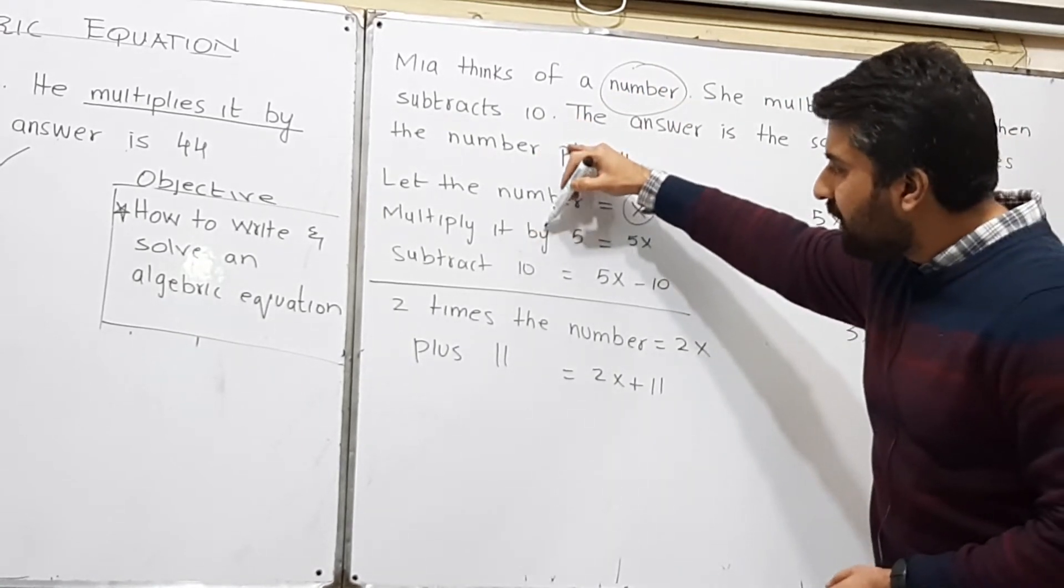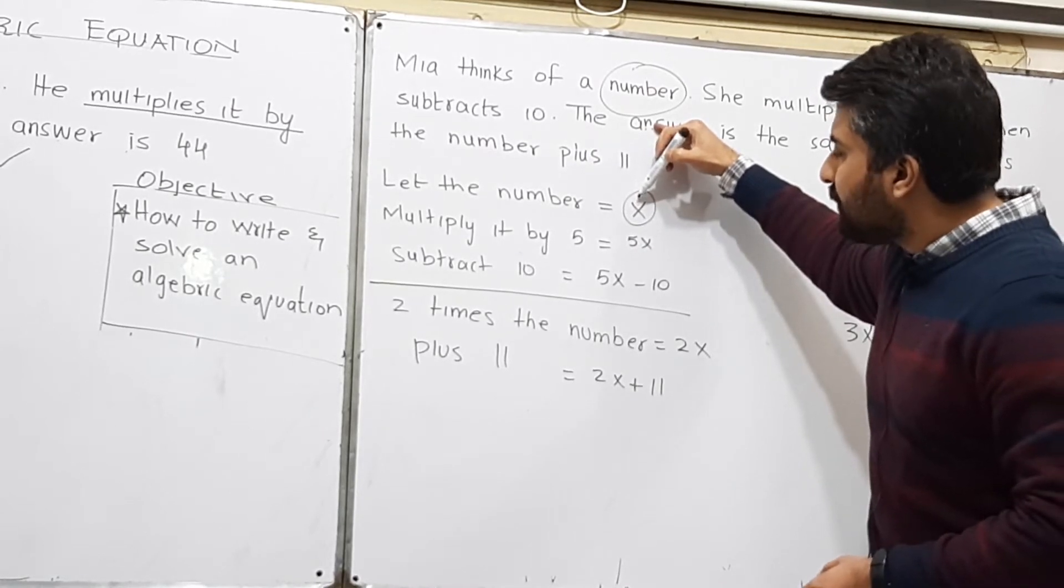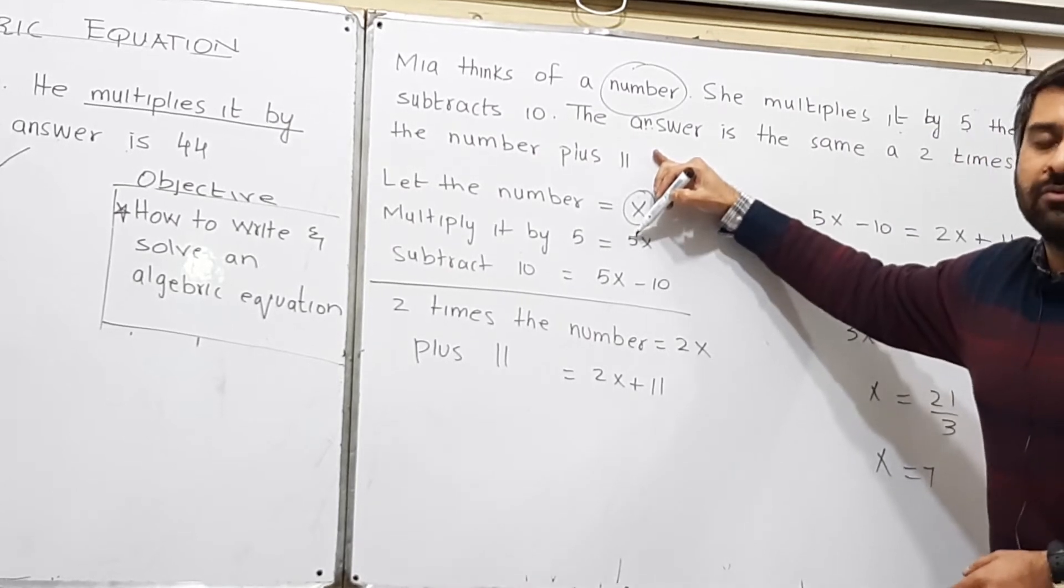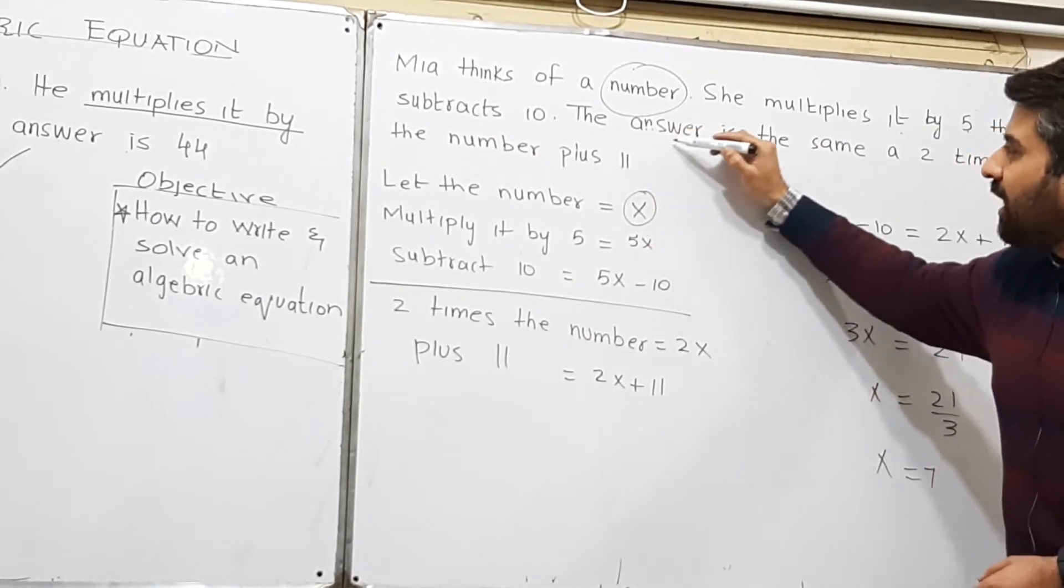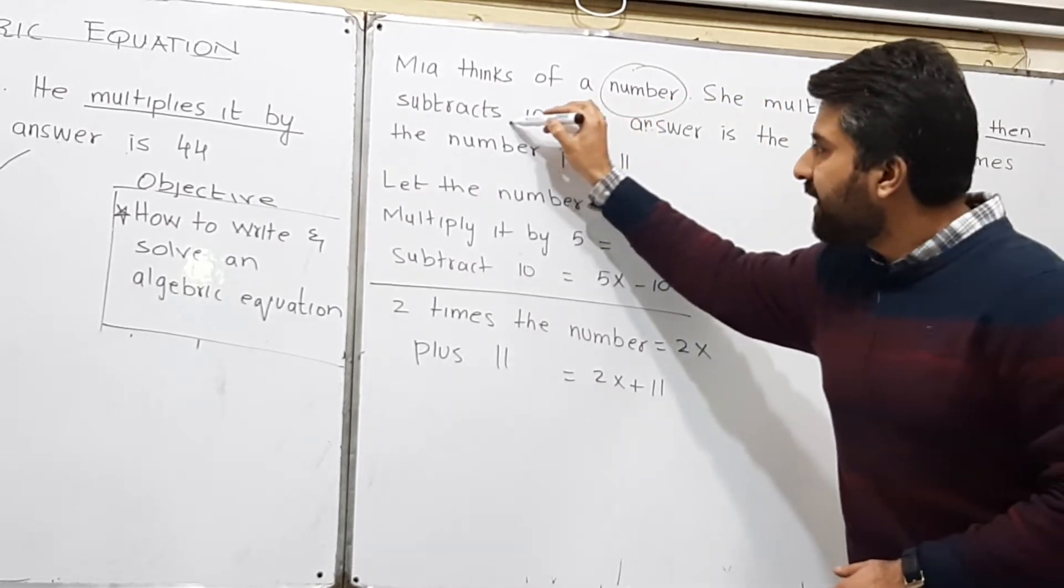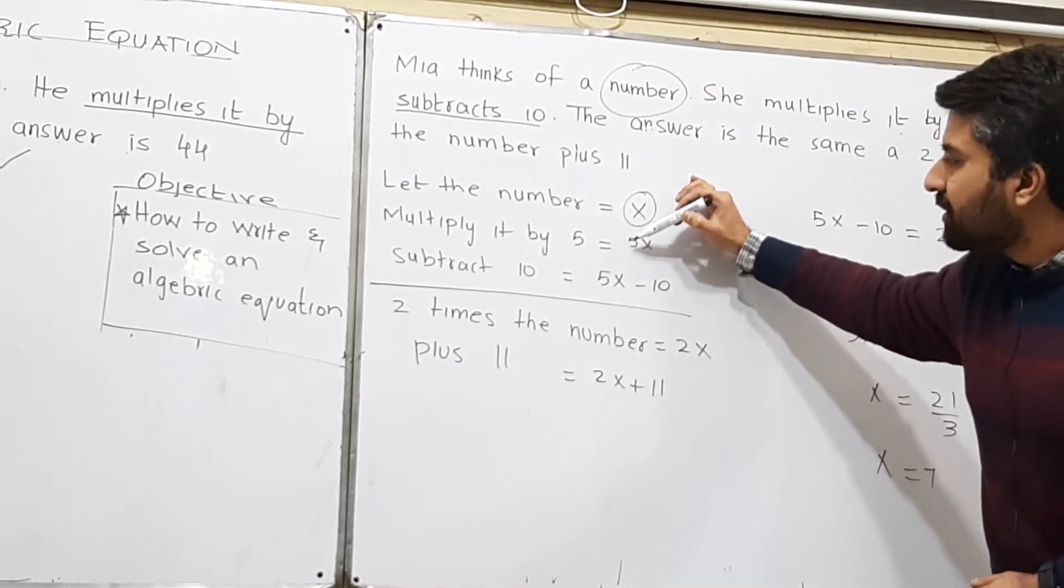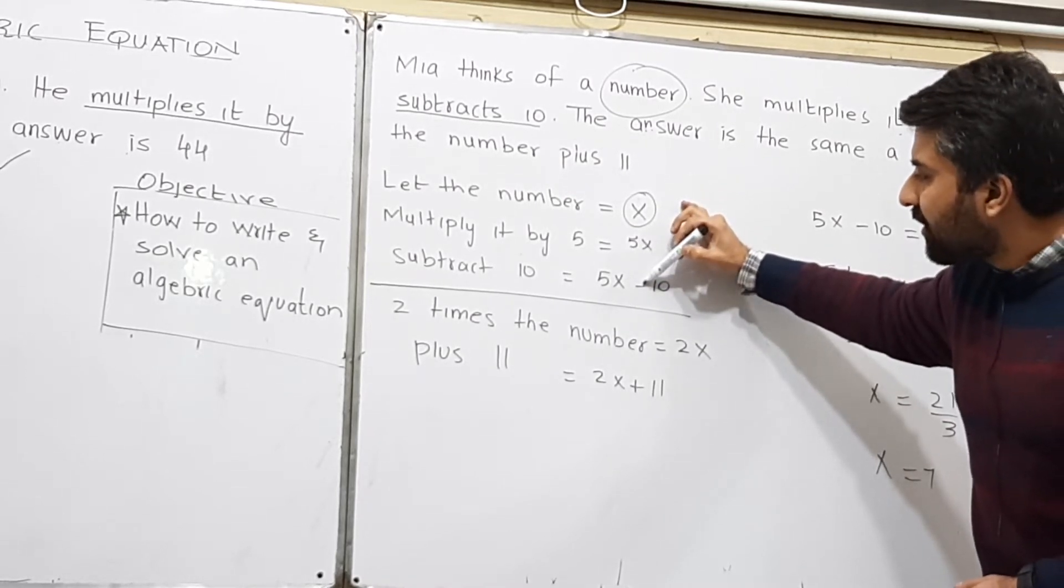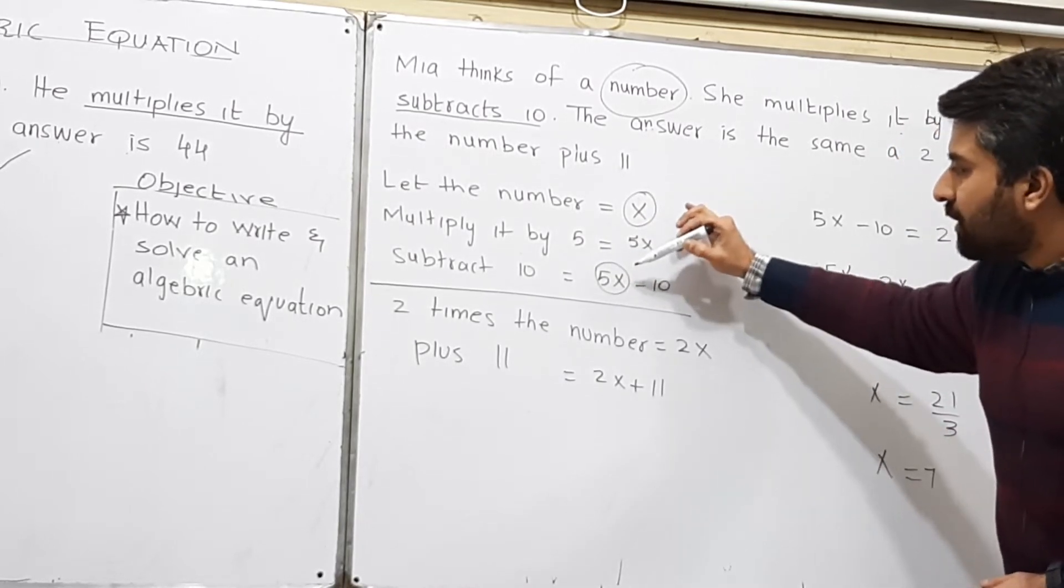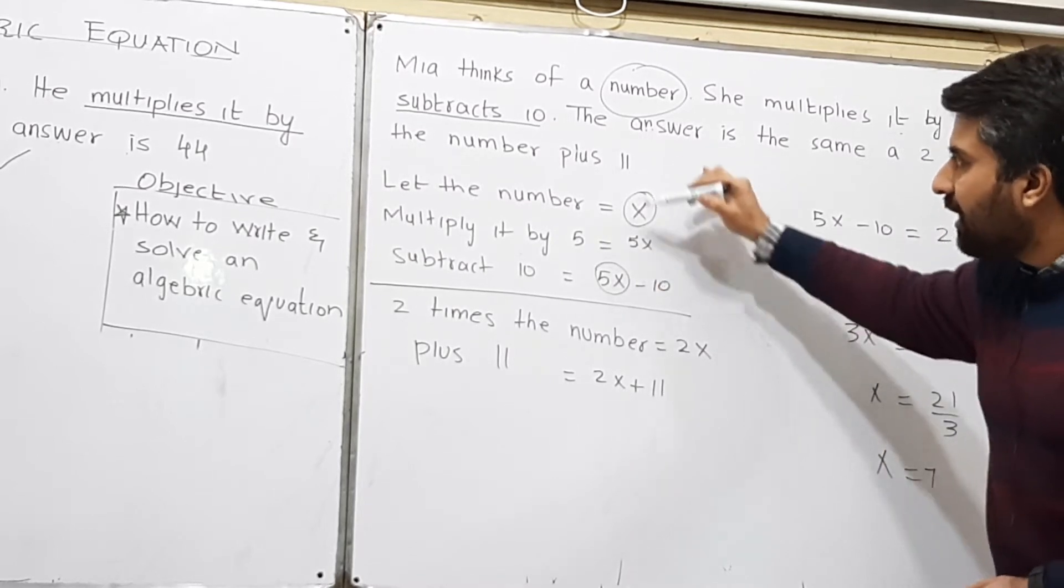Multiply the supposed number by 5, it will become 5x. Then subtract 10. After multiplying by 5, she subtracts 10 from the number that is 5x now. So my answer will be 5x minus 10 up till this point.